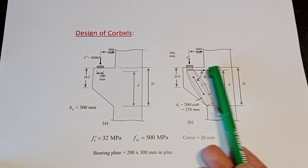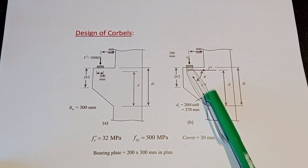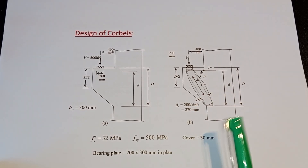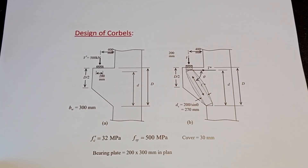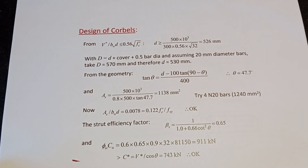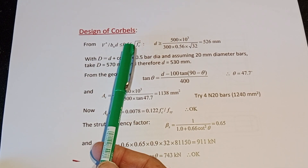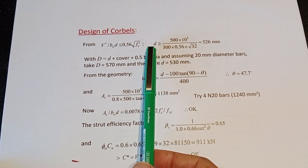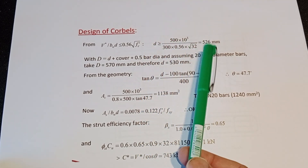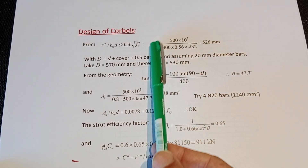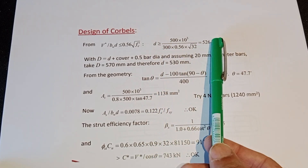The concept is clear: tension side and compression (strut) side. After finding θ we can check the compression width as well. Starting with the first check — V* / (bw · d) ≤ 0.6√f'c — we can rearrange to find the initial required effective depth d. Converting 500 kN to Newtons and solving gives an initial d of approximately 526 mm.